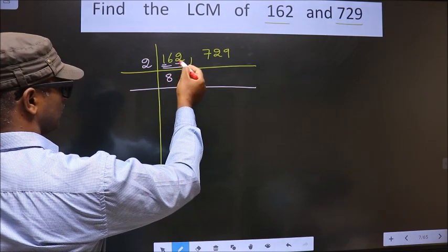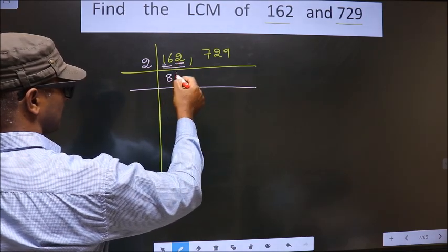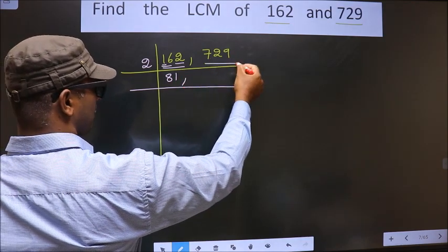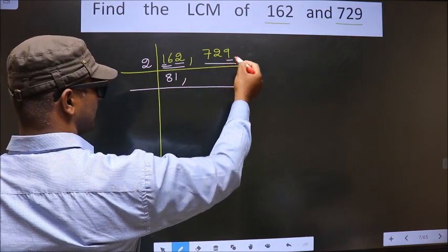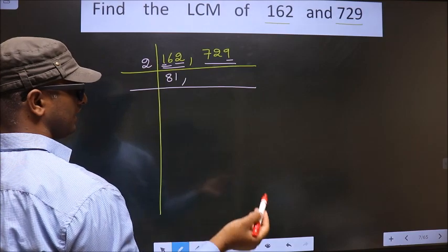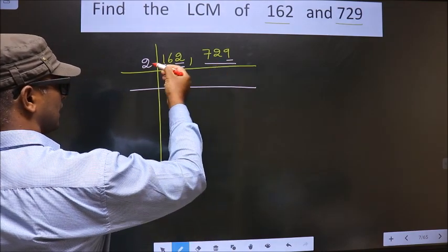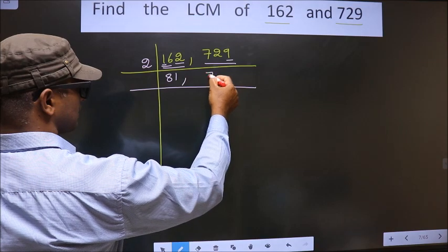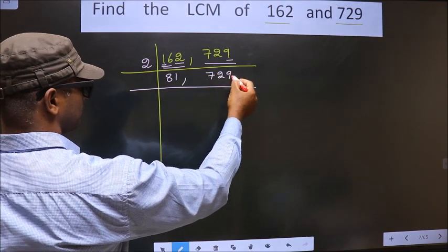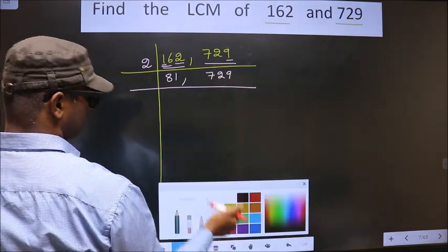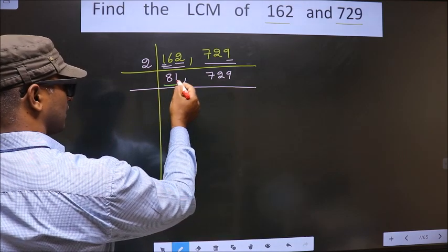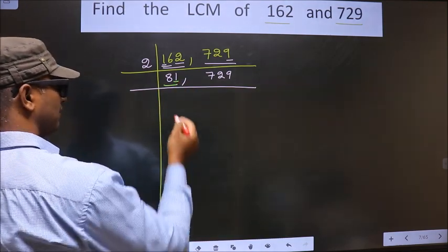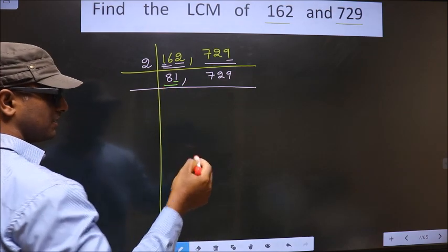Next number is 2. When do we get 2 in the 2 table? 2 ones are 2. Now, for the second number 729, the last digit is 9, which is not even, so this is not divisible by 2 — we write it down as it is. Here, the remaining first number ends in 1, which is also not even, so this is not divisible by 2 either.